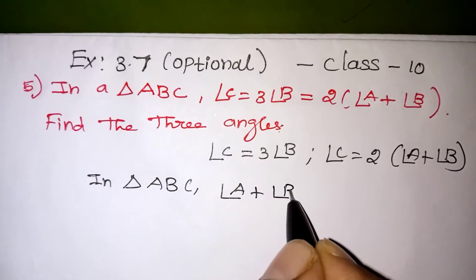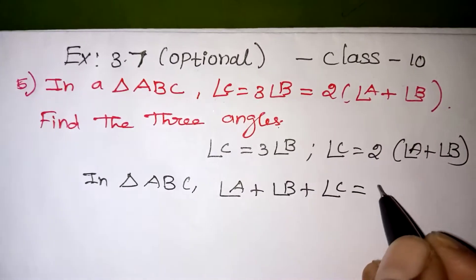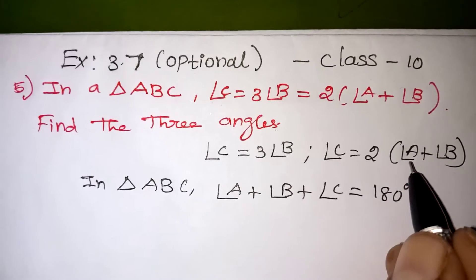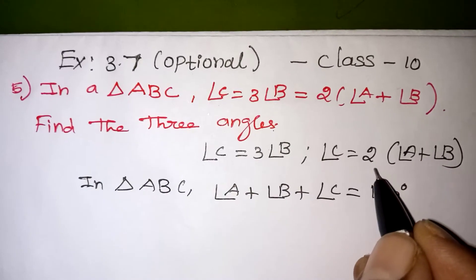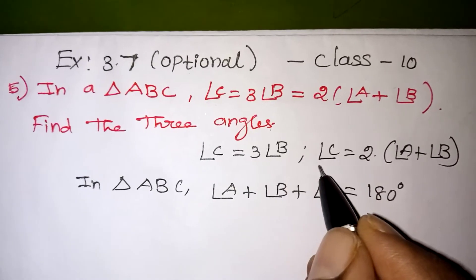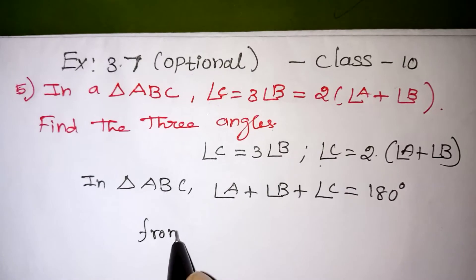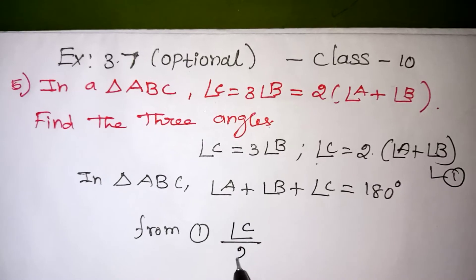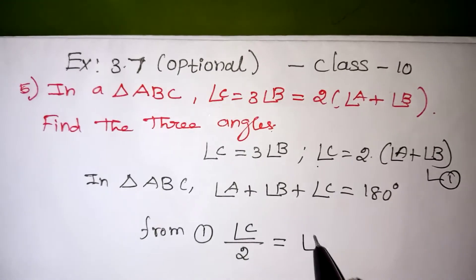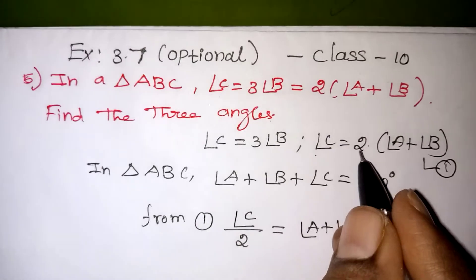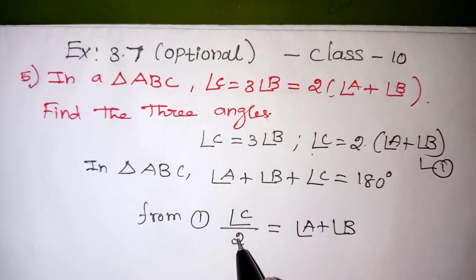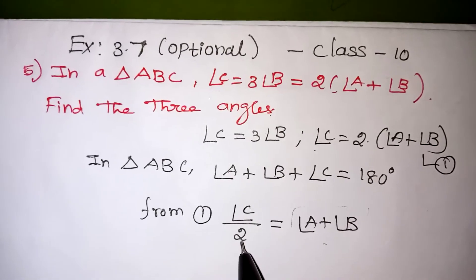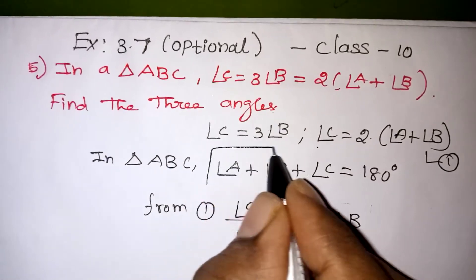In triangle ABC, we know that the sum of all 3 angles is 180 degrees. So angle A plus angle B plus angle C equals 180 degrees. Now from equation 1, I want to get angle A plus angle B alone. That multiplication 2 will come down, so angle C divided by 2 is equal to angle A plus angle B.